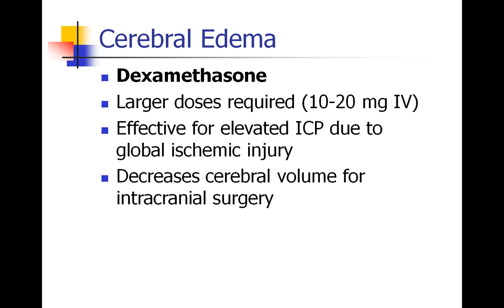Dexamethasone is also used in the treatment of cerebral edema. This is typically a larger dose, 10 to 20 milligrams IV. And this is very effective for reducing intracranial pressure when it's elevated due to an ischemic injury or due to trauma. We also use it in the neuroanesthesia setting because dexamethasone will decrease cerebral volume and allow the surgeons to retract brain tissue in order to get better exposure to the structure they're trying to operate on. So we routinely give dexamethasone for intracranial surgery as well.